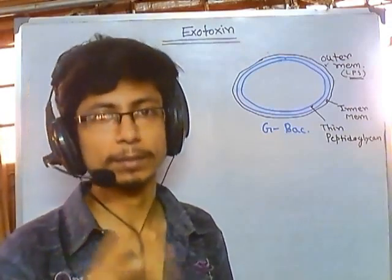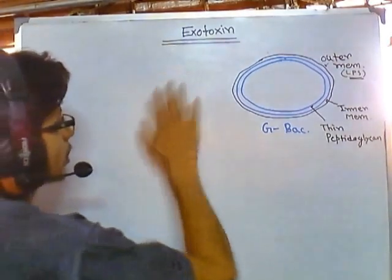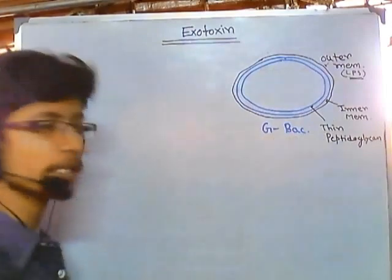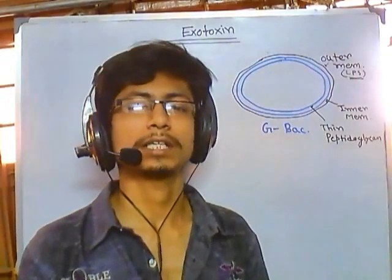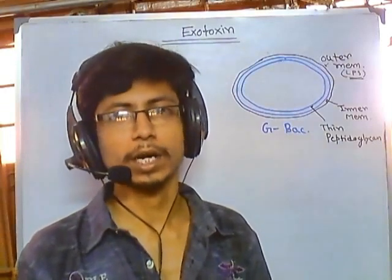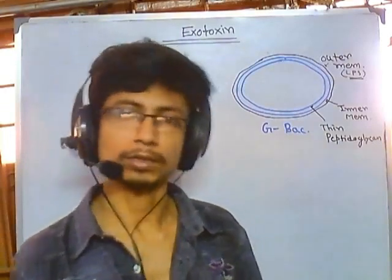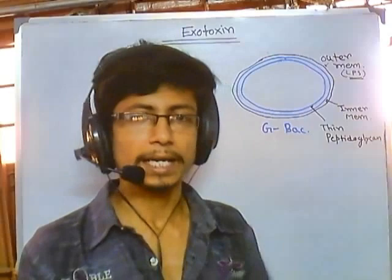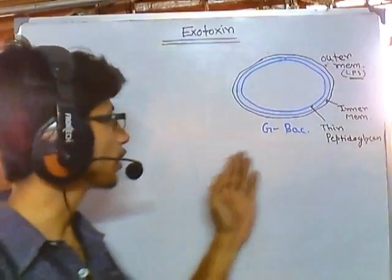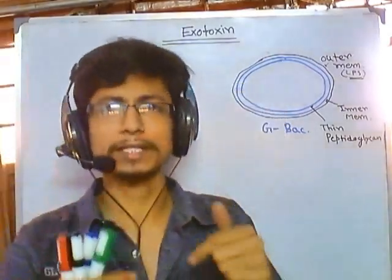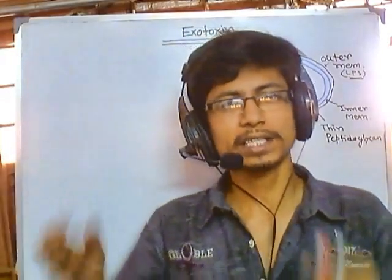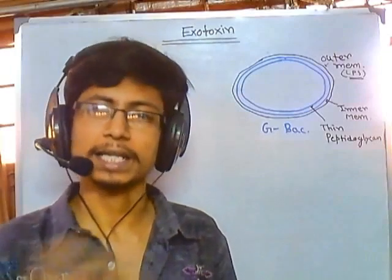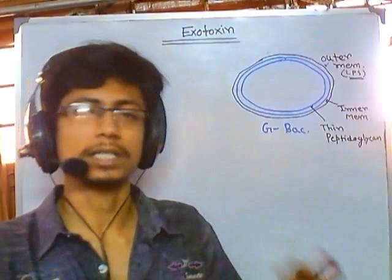Endotoxins are found in gram-negative bacteria, but exotoxins can be found in both gram-positive and gram-negative bacteria. In nature, exotoxins are mostly produced by gram-positive bacteria, but many gram-negative bacteria produce them too. Another difference: endotoxin is a structural part of the bacterial cell, whereas exotoxin is not — it is a protein component that the bacteria synthesize and secrete outside, just like enzymes, and it acts on certain regions to cause certain effects.